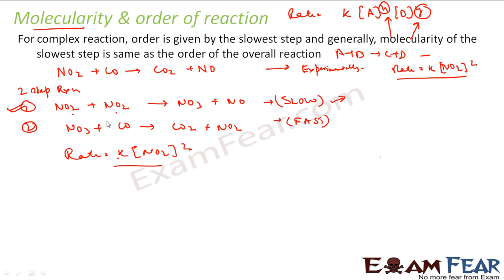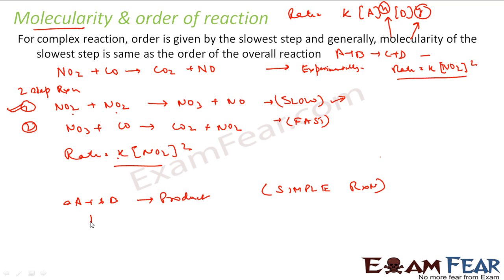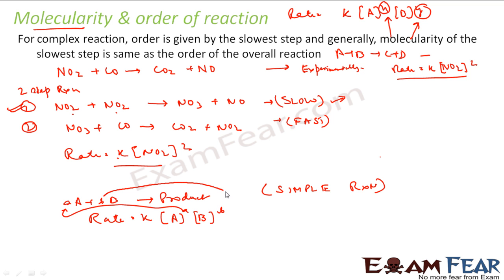For a simple reaction — say A + B → product — the rate = k[A]^a [B]^b, where the exponents are simply the stoichiometric coefficients. For this complex reaction, it has many steps; the slowest step is the rate-determining step, and in that slowest step the coefficient of NO2 is two because there are two NO2 molecules.